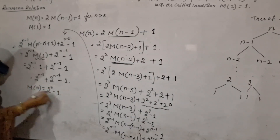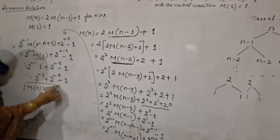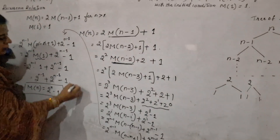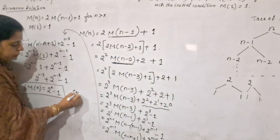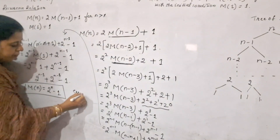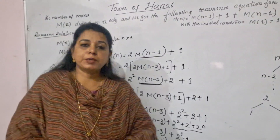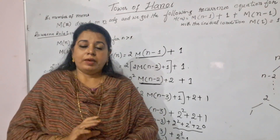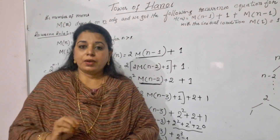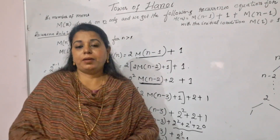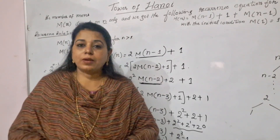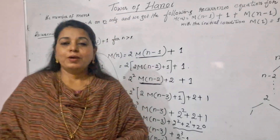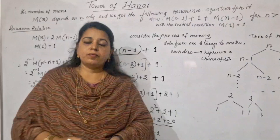Further simplification gives M(N) = 2^N - 1. So this particular algorithm has exponential behavior, meaning it is going to take a very long time — we cannot even imagine — and that much time is taken for this algorithm to complete its job, even for smaller values of N.